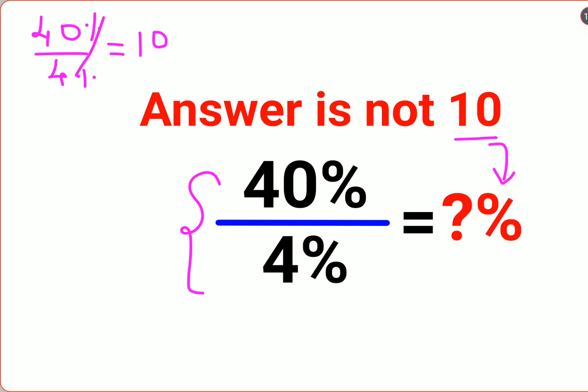So now let's understand why. Whenever you have a percent sign ahead of a number, you can convert that number into a fraction by dividing it by 100. So 40% can be written as 40 upon 100 divided by 4 upon 100.